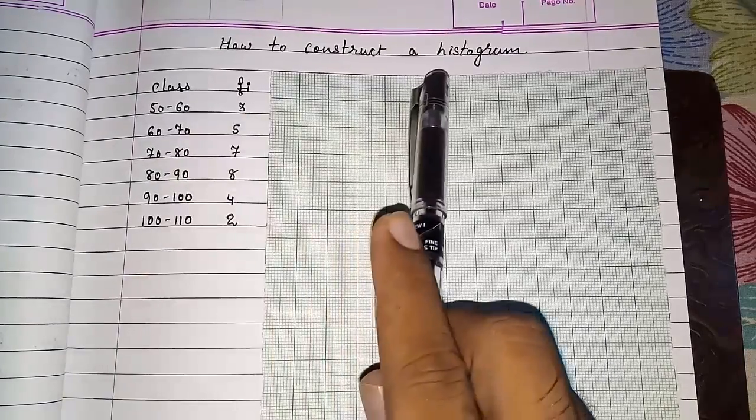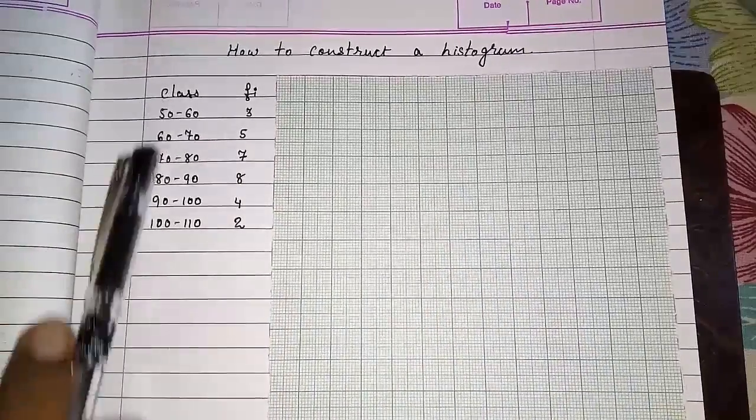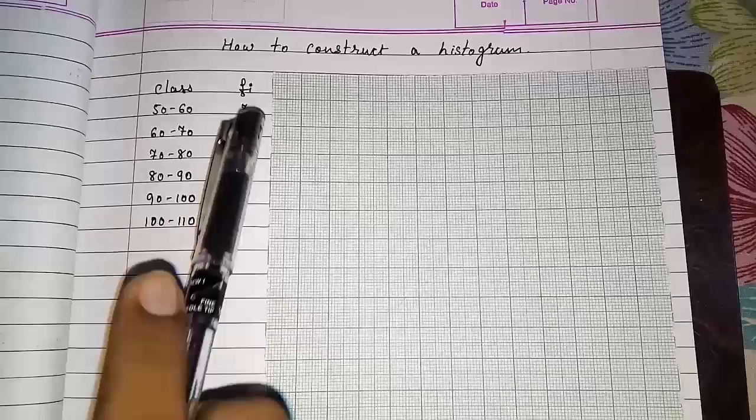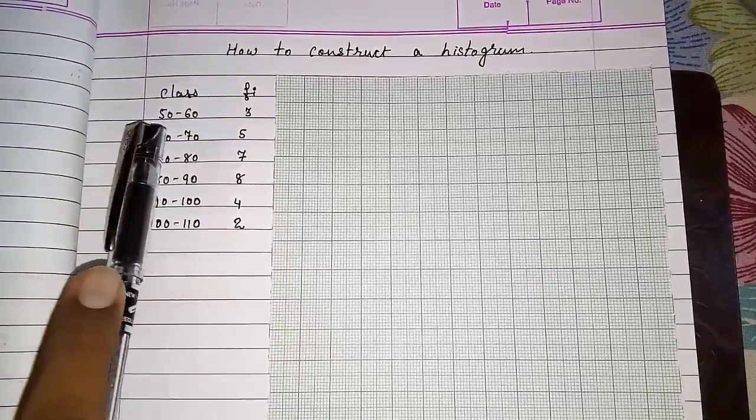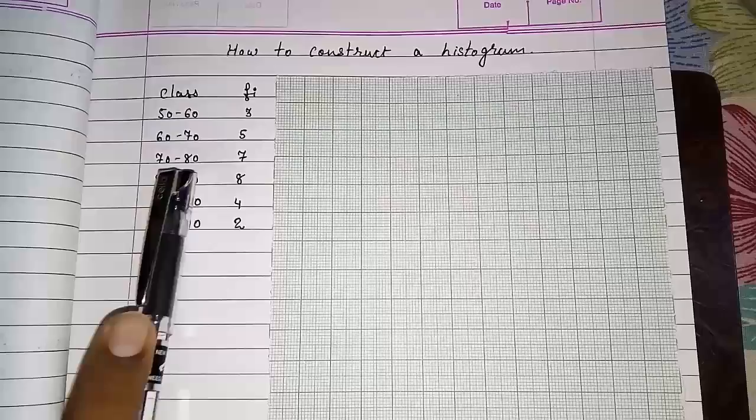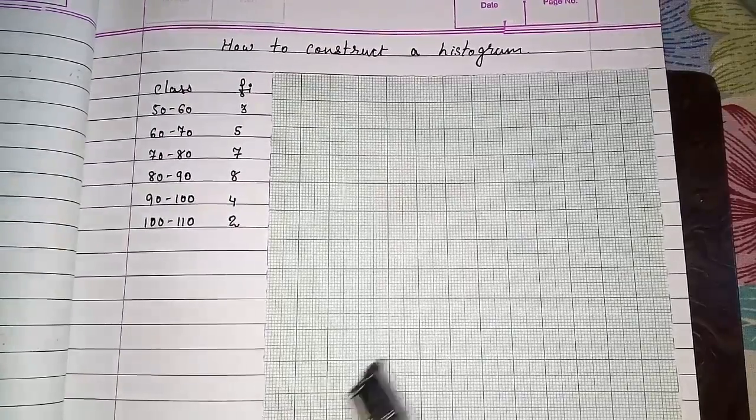Now how to construct a histogram. Look, first we have to see the class and then the frequency. Every time we start, first we have to see what is the class interval between them and what is the starting point that we have to keep in mind.